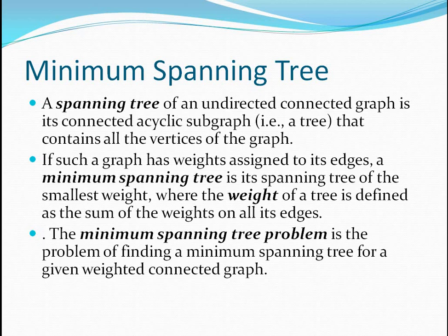Before seeing Prim's and Kruskal's algorithm, we must know what a minimum spanning tree is. For that, we should know the definition of a spanning tree. A spanning tree of an undirected connected graph is its connected acyclic subgraph that contains all the vertices of the graph. The aim is to obtain a subgraph which is acyclic and covers all the vertices.